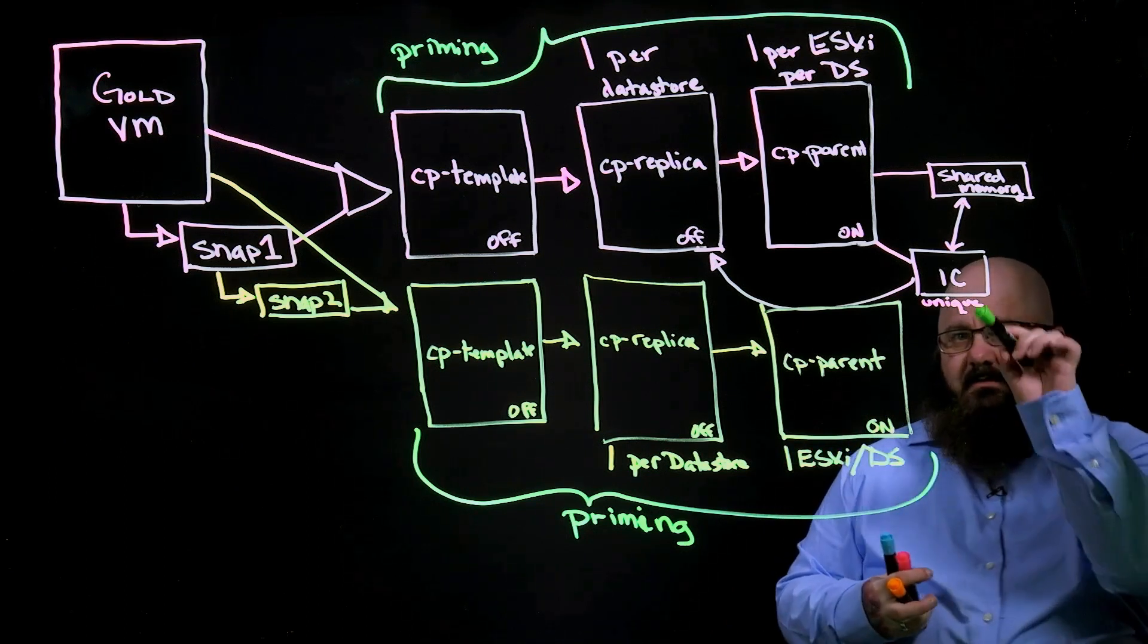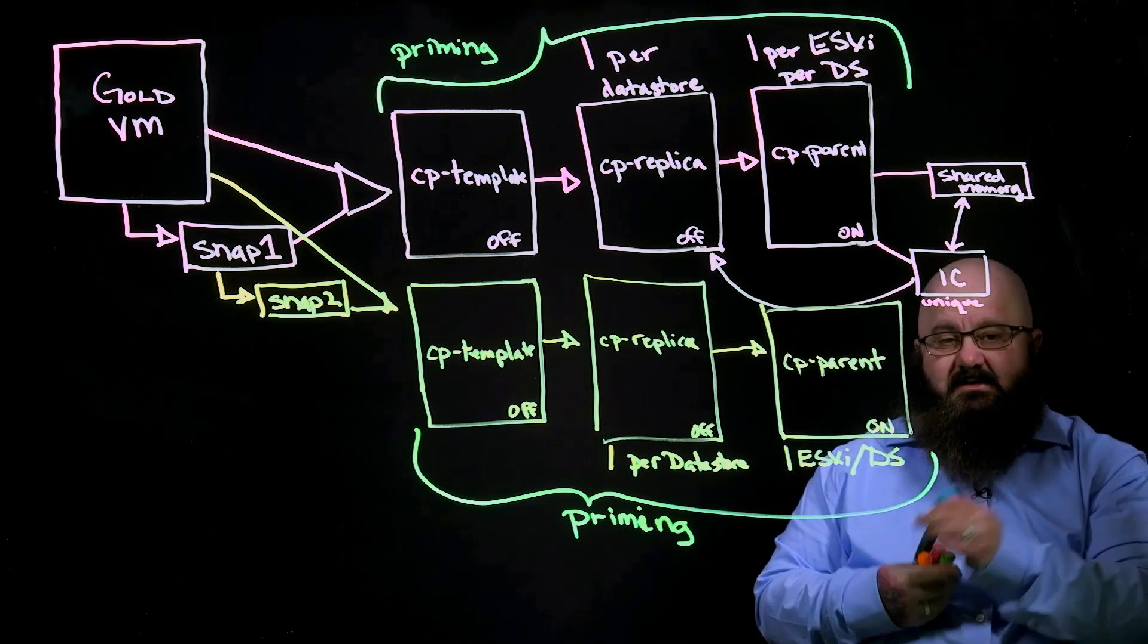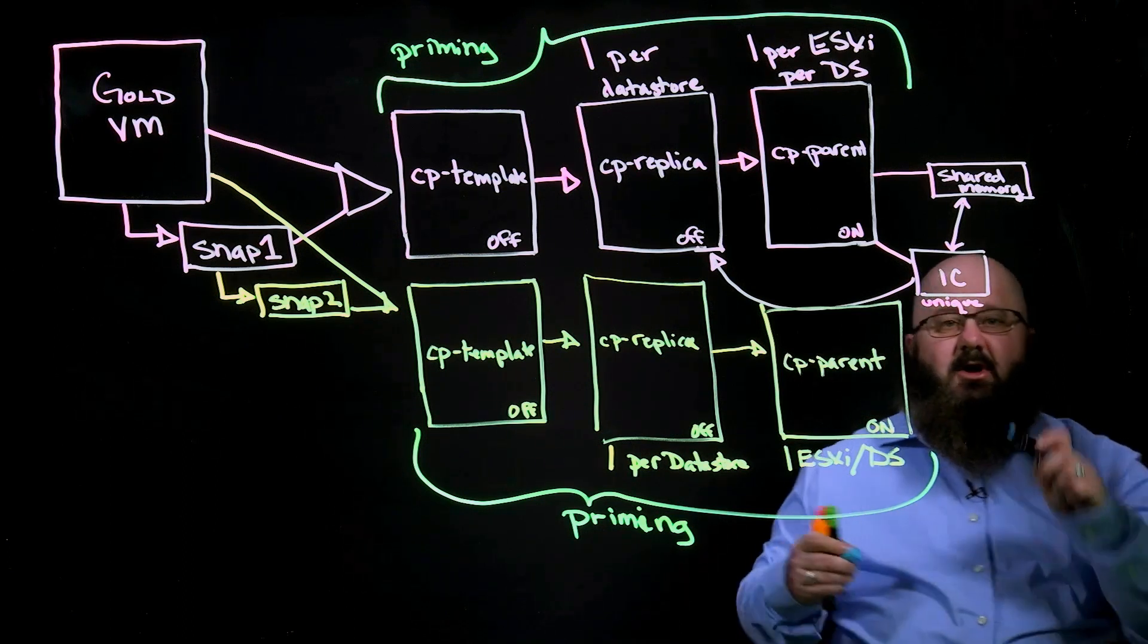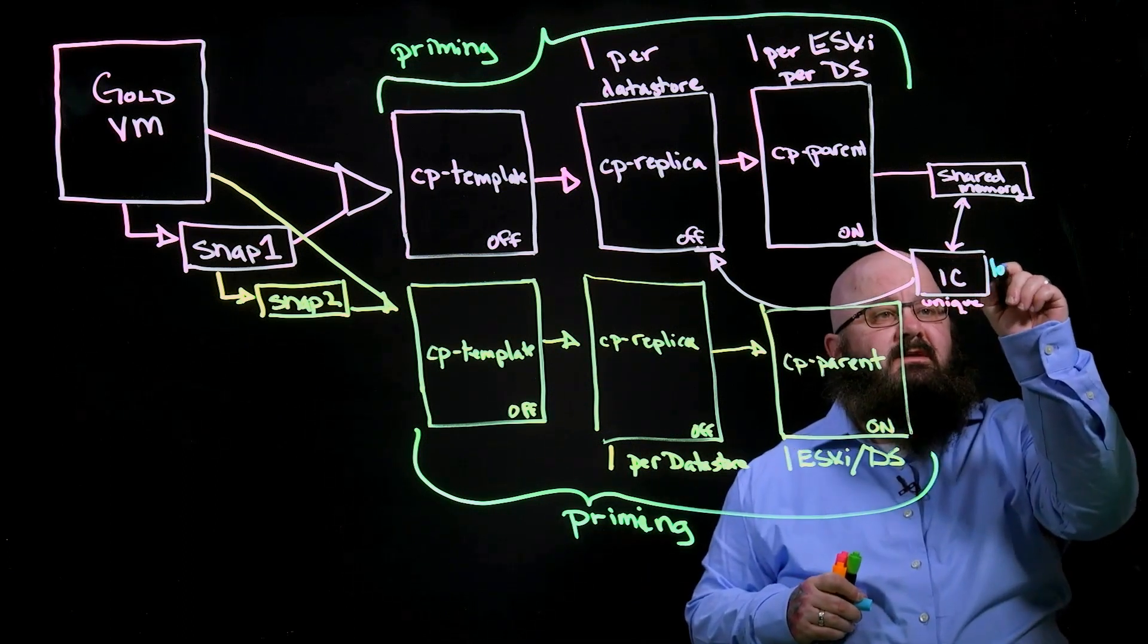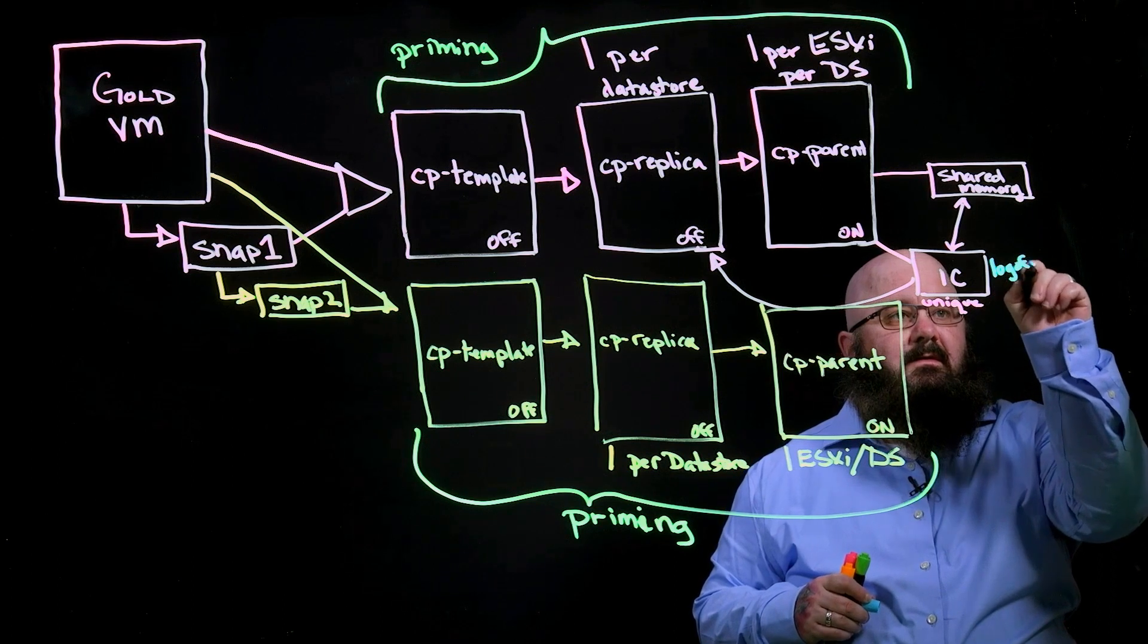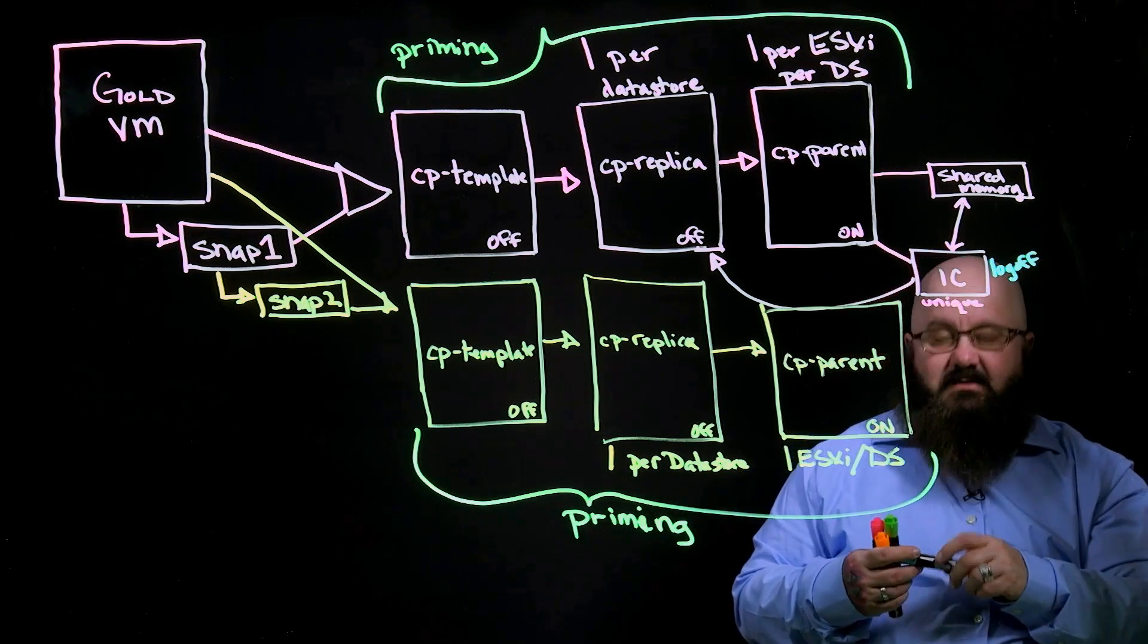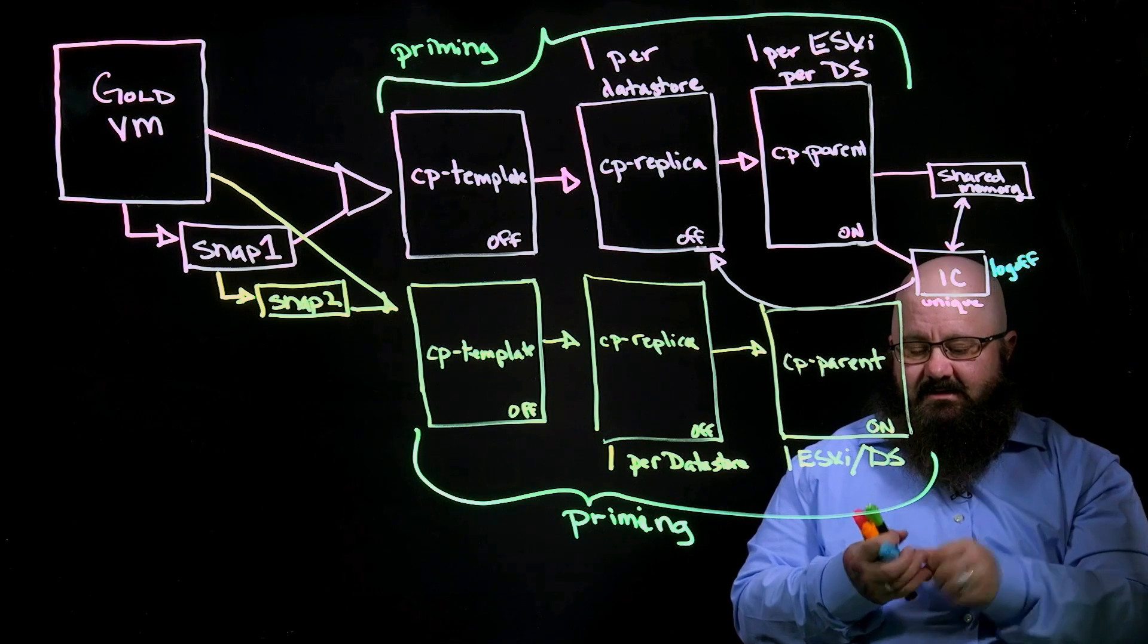But once that's done, how do I get my instant clone to attach here? So I tell my user, I send them a note, and I say, log off. So user logs off. And in that process, when they log off, the instant clone there gets deleted.